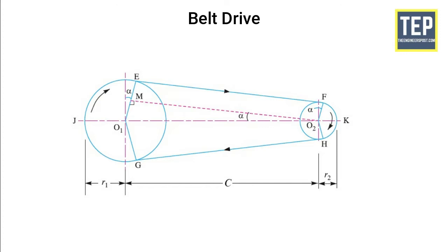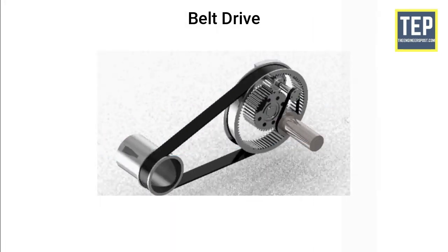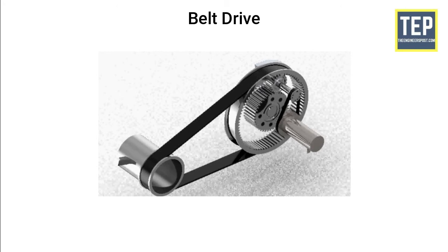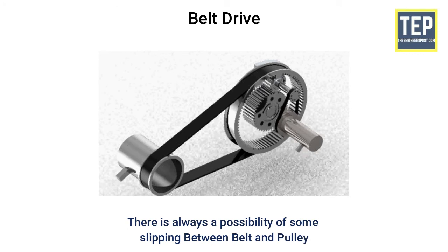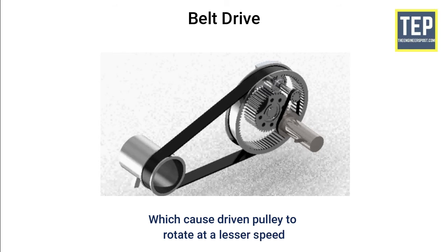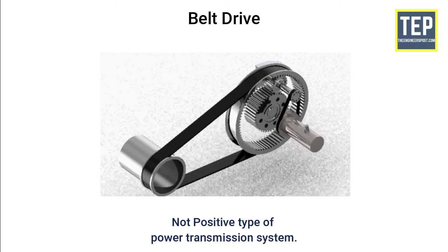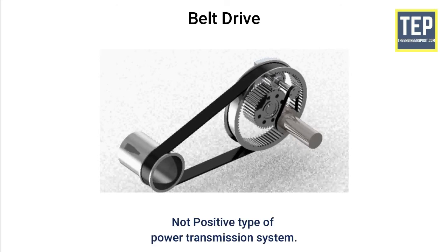The tensions in the tight and slack sides of the belt depend on the angle of contact. Belt drives must be arranged such that the slack side comes above and the tight side comes below the pulleys — this arrangement increases the angle of contact on the driven side. There is always a possibility of slipping between the belt and the pulleys, which causes the driven pulley to rotate at a lesser speed and reduces power transmission. Hence, belt drives are said to be not a positive type of power transmission system.